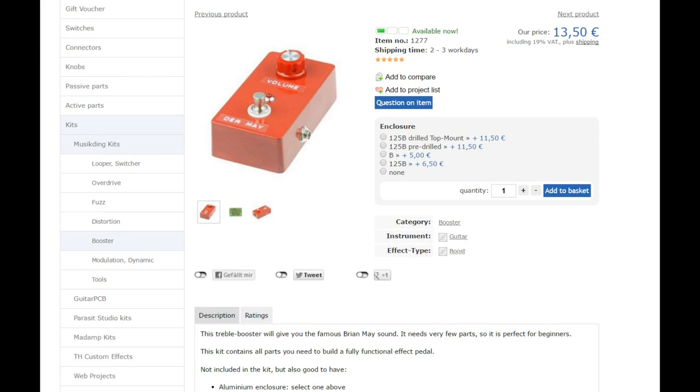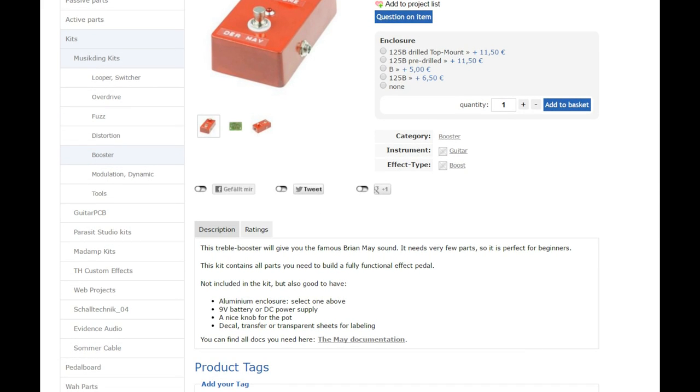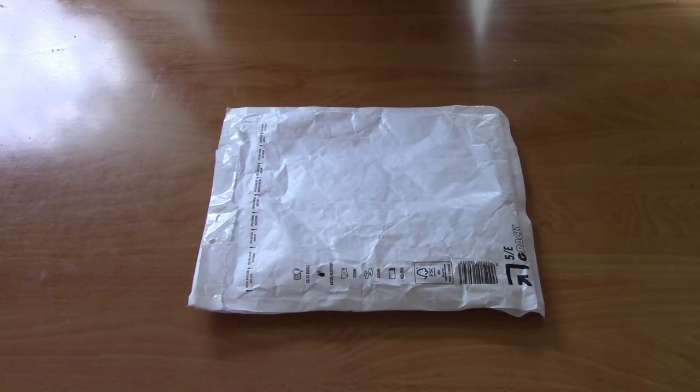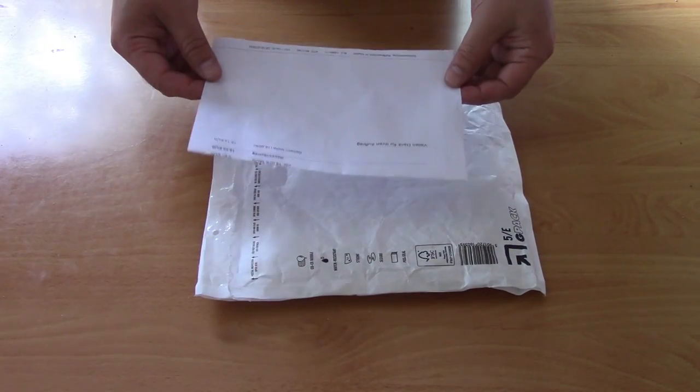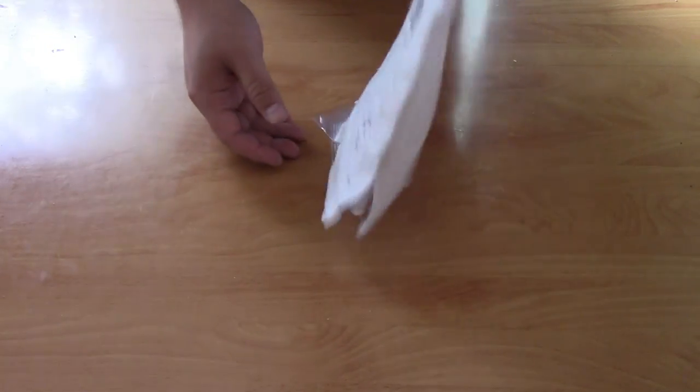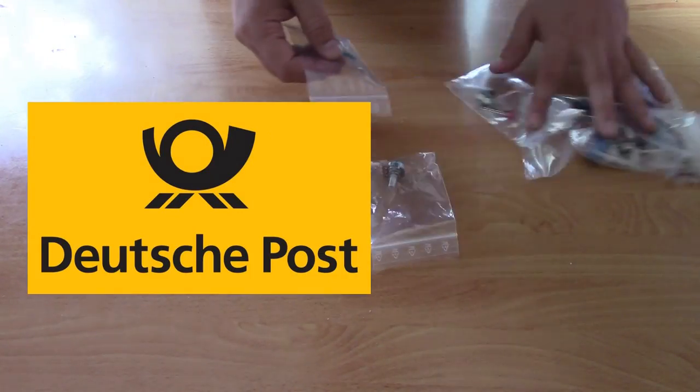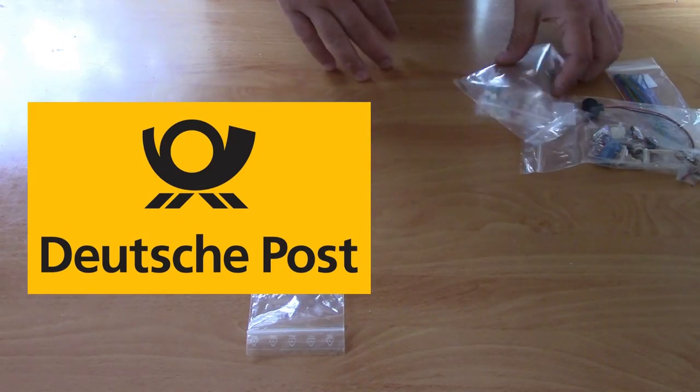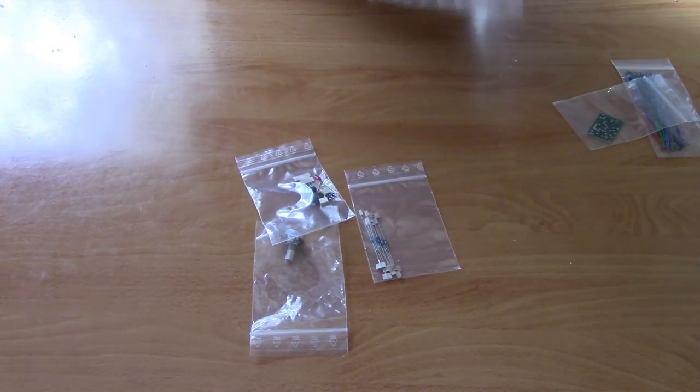I ordered the basic treble booster kit. At home I had some knobs and an enclosure lying around. They ship the kit to you in a padded envelope. Shipping was fast despite the fact that I opted for the slowest option of Deutsche Post. I received the kit in just over one week in Canada. No brokerage fees and no customs issues.